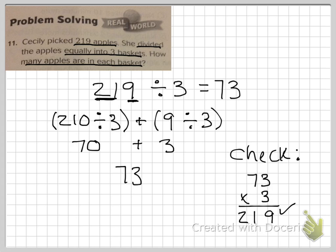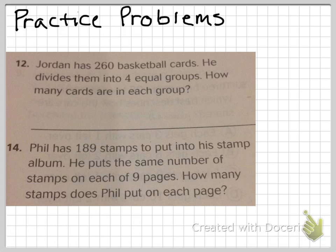Okay, here are your practice problems. Jordan has 260 basketball cards. He divides them into four equal groups. How many cards are in each group? Remember, use the distributive property — break apart that 260 into two numbers that can be divided equally by 4. Your second problem: Phil has 189 stamps to put into his stamp album. He puts the same number of stamps on each of 9 pages. How many stamps does Phil put on each page? I see some numbers in there that are easily divided by 9. Take your time, re-watch if needed, and we'll see you tomorrow.